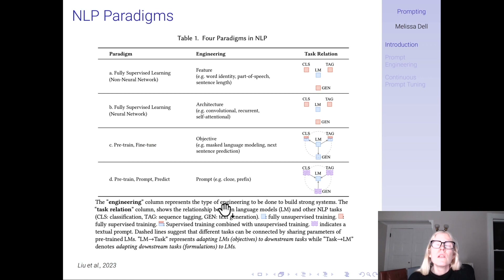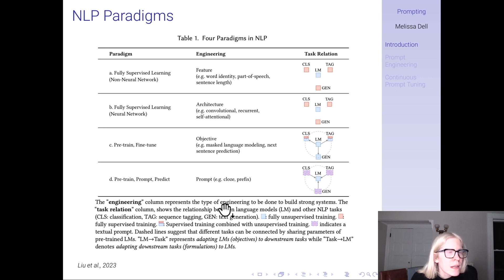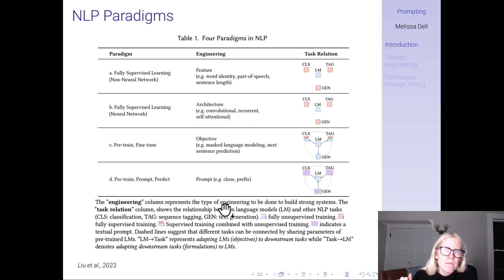This is a chart from that review article about NLP paradigms. Fully supervised learning without neural networks, we didn't really talk about that in this course. Fully supervised learning with a neural network — training an RNN from scratch. We spent most of the course talking about pre-train and then fine-tune, where you use a pre-trained large language model like RoBERTa and then fine-tune it to your downstream classification task.